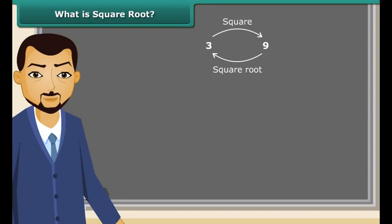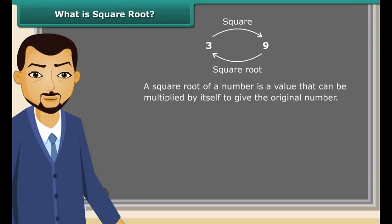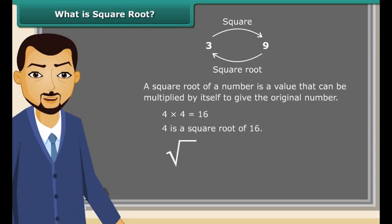The square root is a value that can be multiplied by itself to give the original number. So when 4 is multiplied by 4 we get 16, which means 4 is the square root of 16. The square root is represented by a special symbol called the radical. We can use it like this: the square root of 25 is 5.